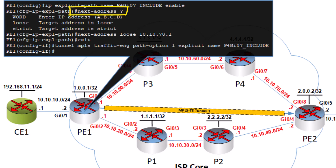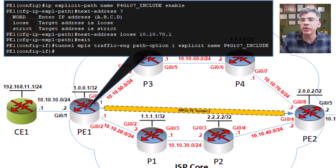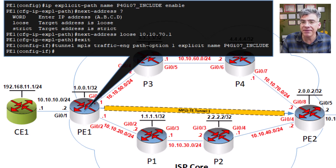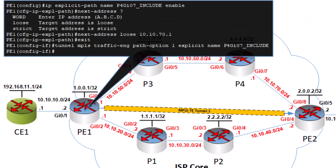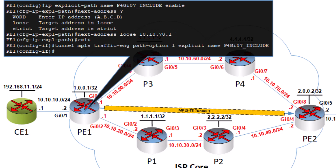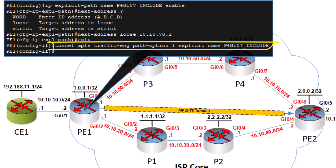And this time, we'll use the next address keyword. This keyword essentially says that we want one of the next addresses in the path to include the IP address we specify. But this configuration option requires an additional parameter — we must specify either strict or loose operation. Loose means that the next address we specify should be one of the next addresses in our path. Strict means that the next address we specify should be the very next address in our explicit path — in other words, strict means that the IP address we specify should be directly connected. Now since the interface address we're specifying is several hops away, we won't use the strict option, we'll use the loose option. So we specify loose and also specify the IP address we want to include in the path. Next, we apply the explicit path we created to our tunnel using this command here. This should result in the path going through this interface we specified.